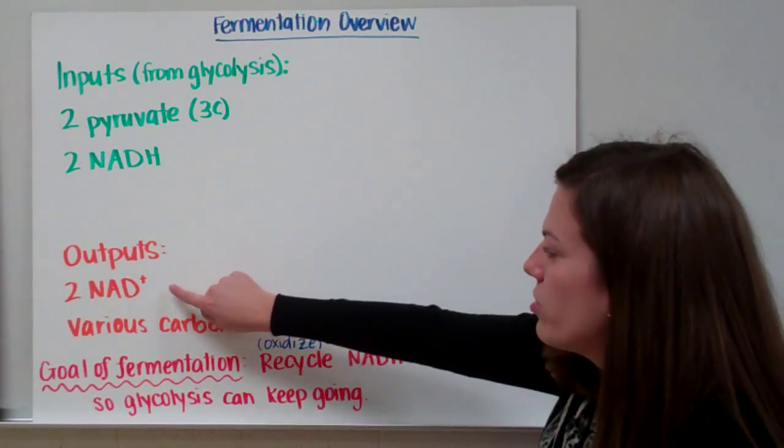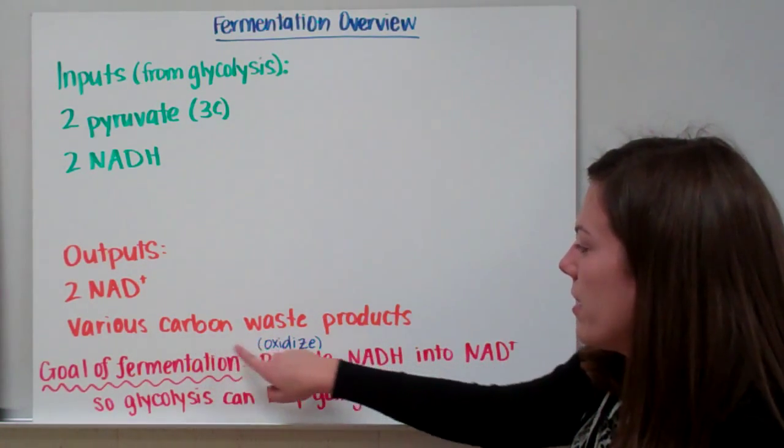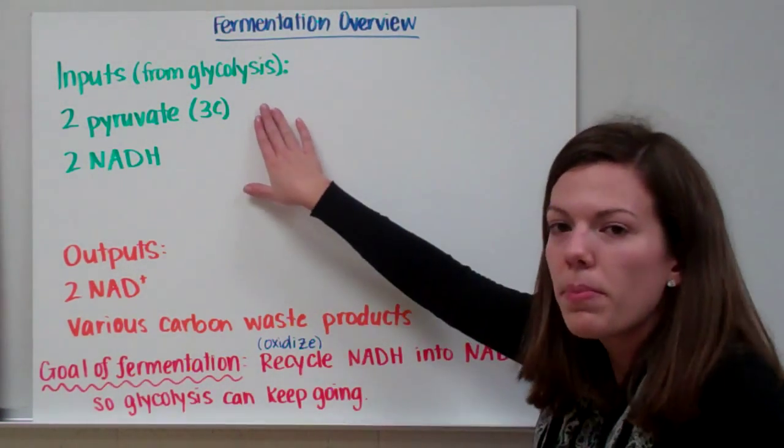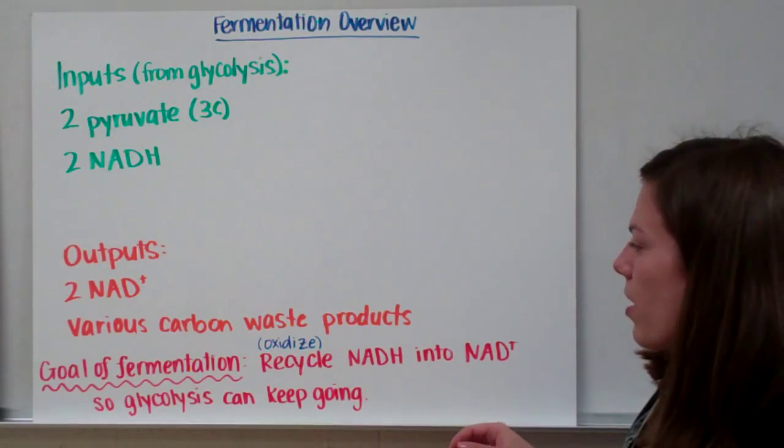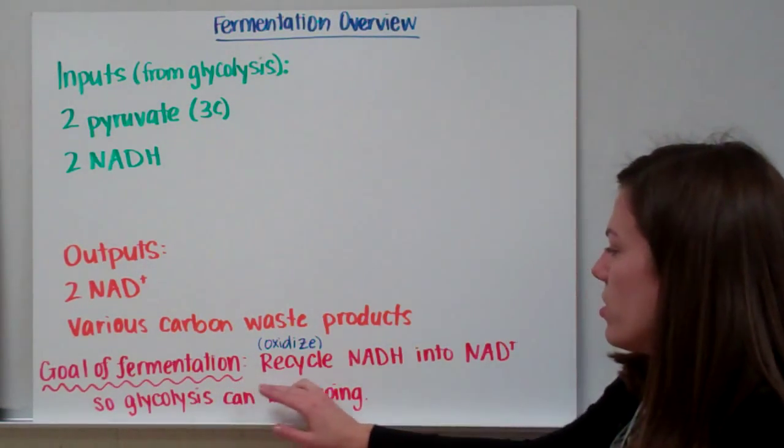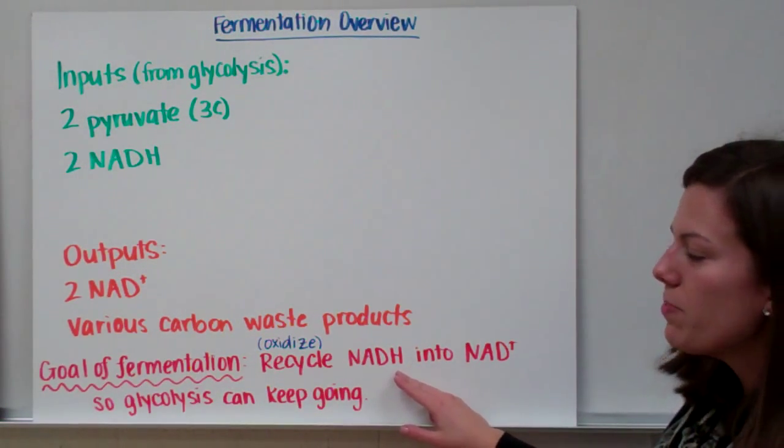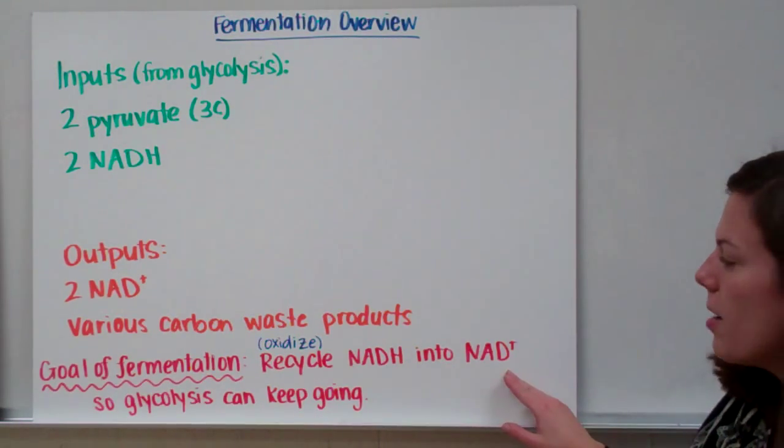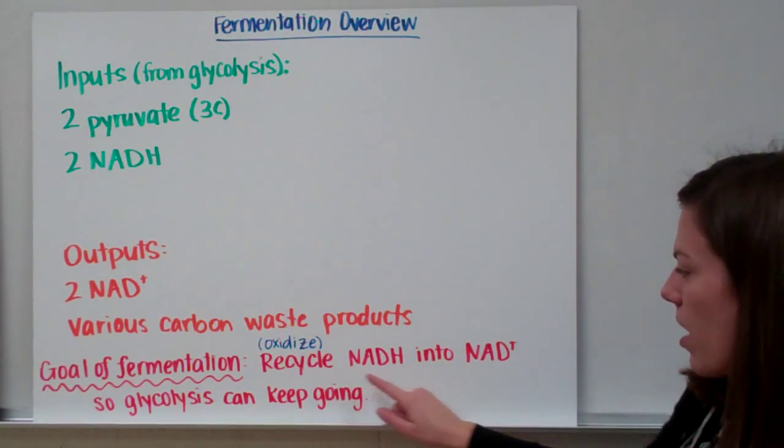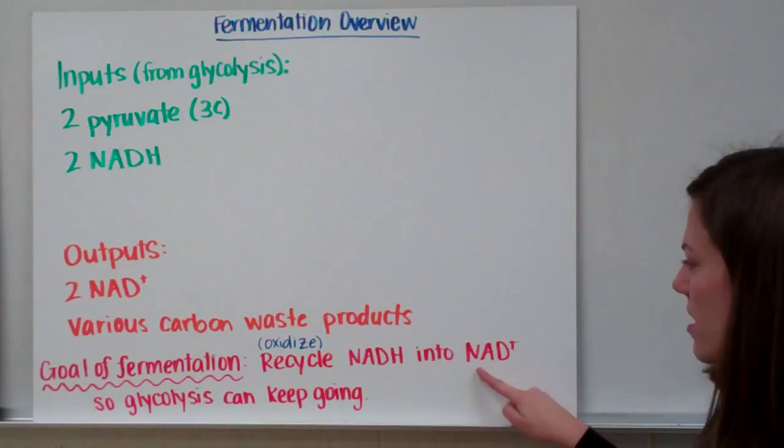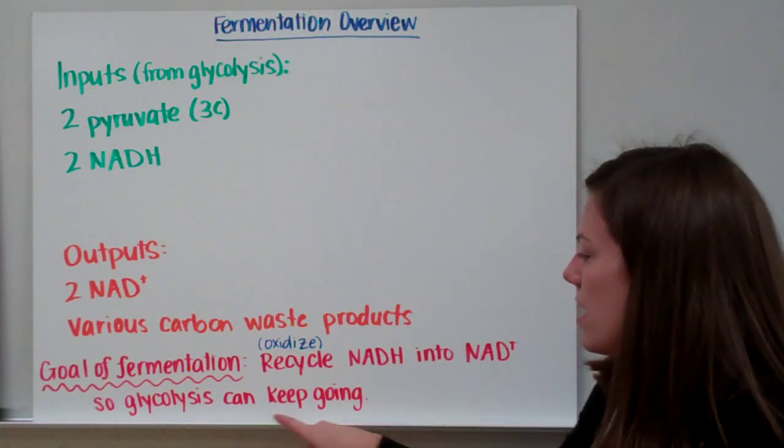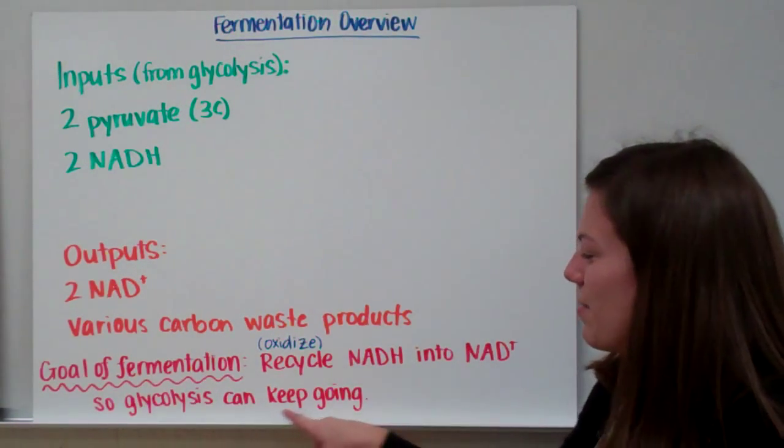So our output are two NAD+, and then we also have various carbon waste products. So whatever we turn the pyruvate into is our carbon waste product. So the goal of fermentation is to recycle NADH back into NAD+. If you remember that losing electrons means oxidize, so we're oxidizing NADH back into NAD+ so that glycolysis can keep going.